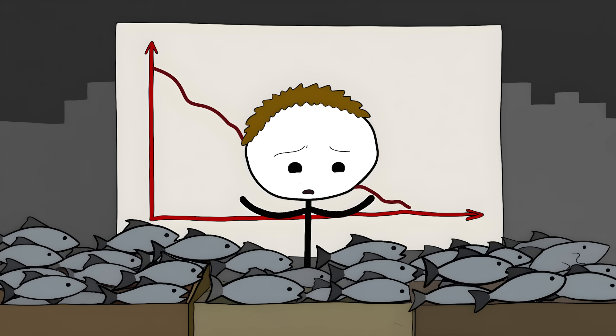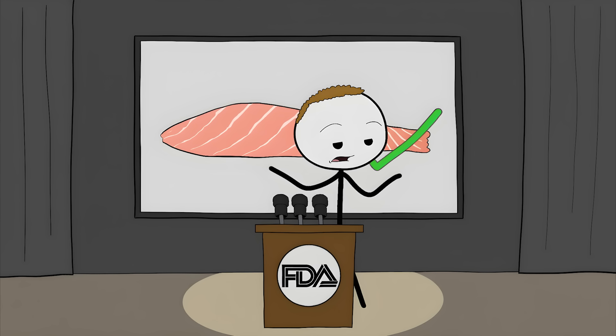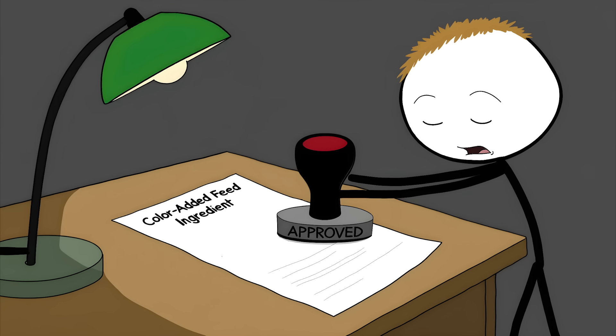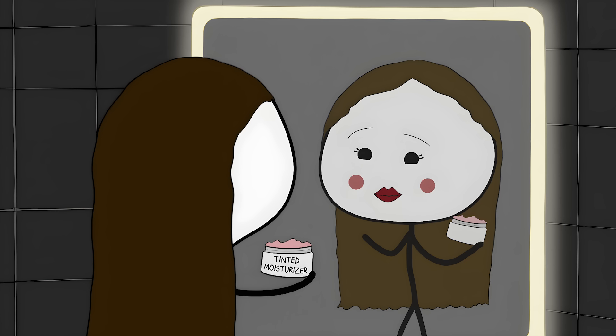When one salmon farm tried selling its naturally gray salmon, sales tanked. And technically, this isn't even considered artificial coloring by the FDA. They call it a color-added feed ingredient. It's like when your friend says they're not wearing makeup, just a tinted moisturizer.